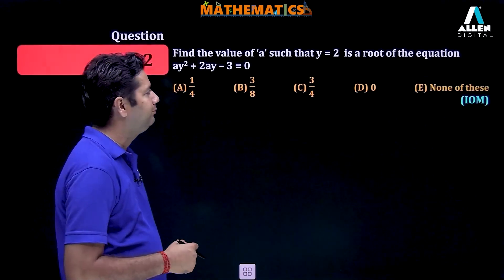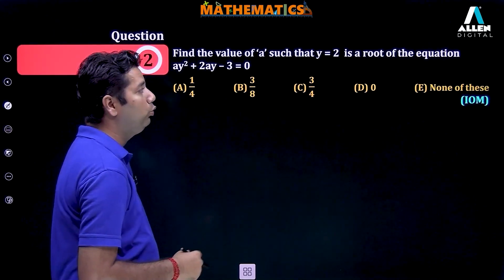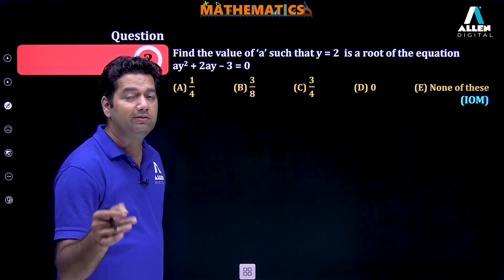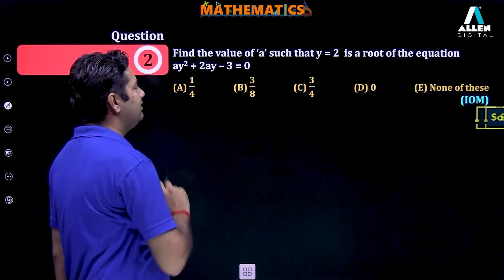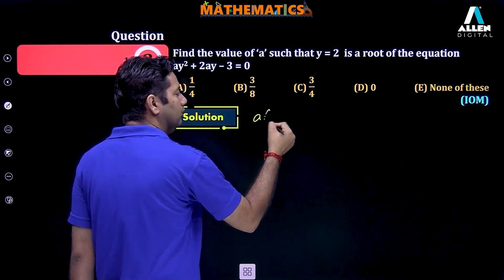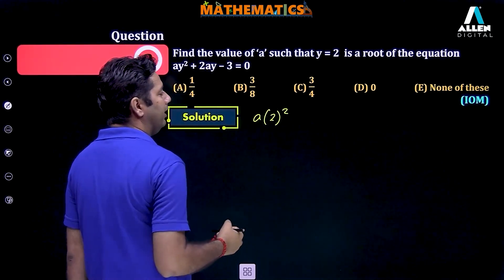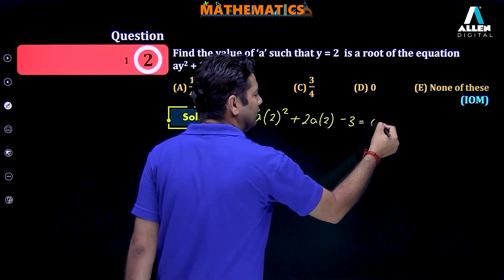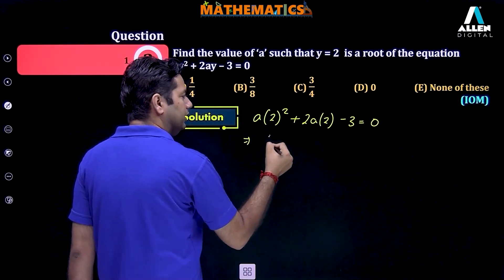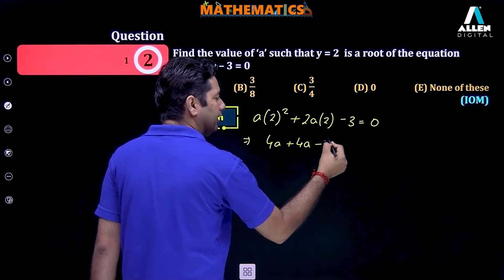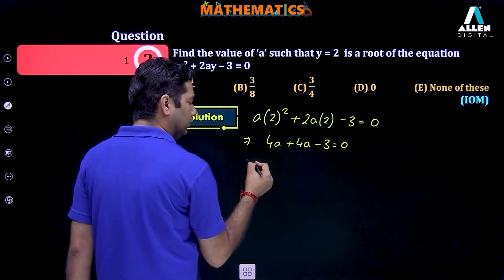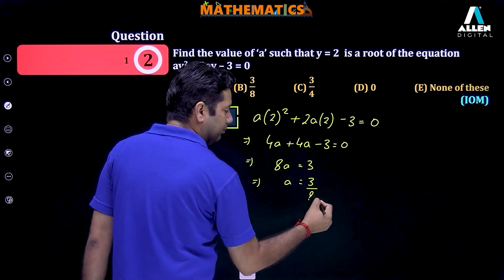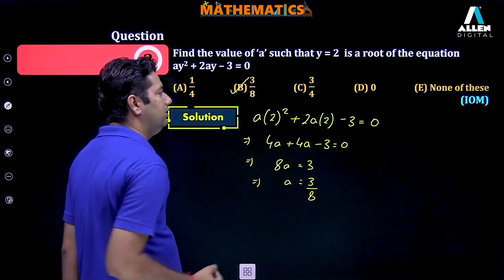Next question: find the value of a such that y equal to 2 is the root of the given equation. Since y equal to 2 is the root, it will satisfy the equation. Substituting: a times 2 square plus 2a times 2 minus 3 equals 0, which gives 4a plus 4a minus 3 equal to 0, meaning 8a equal to 3, so the value of a is equal to 3 by 8. Option B is the correct one.